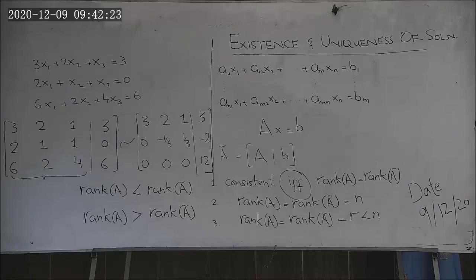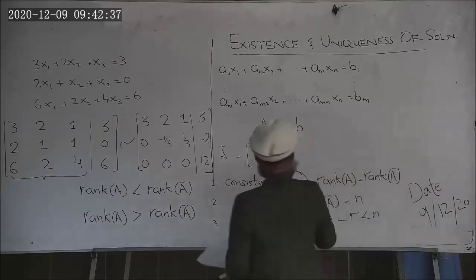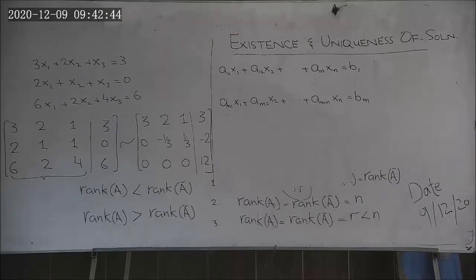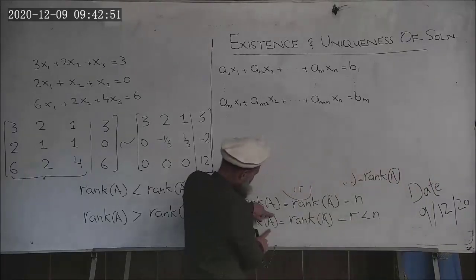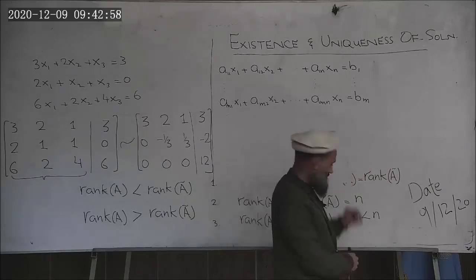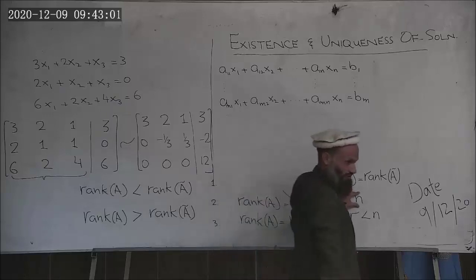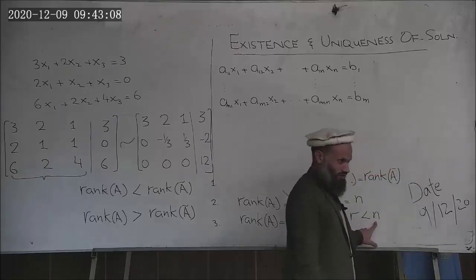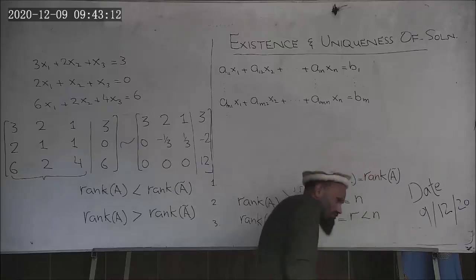I omit the proofs of all these statements. Before moving to another topic, let me clarify: rank of A must equal rank of A-tilde for a solution to exist. Then there are two possible sub-cases: if rank equals N, there is a unique solution; if rank is less than N, there are infinitely many solutions.